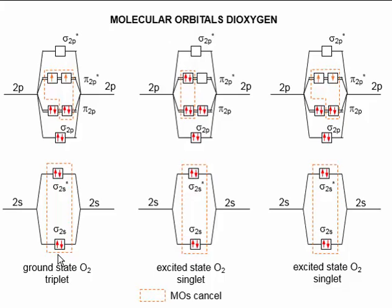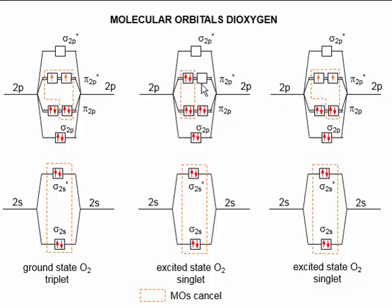If we put energy into ground state dioxygen, we can flip a spin, which gives us a total spin of zero and a multiplicity of two times zero plus one equals one — these are singlet states. These singlet states are excited states and they are more reactive than ground state dioxygen. When organic molecules react by giving up two electrons at a time being oxidized, it's not so easy to react with ground state triplet oxygen because of the spin problem — both electrons are spin-aligned. But organic molecules can more readily react with singlet oxygen, because you can imagine a pair of electrons being inserted in as the organic molecule is oxidized. Singlet oxygen is much more reactive than triplet oxygen.